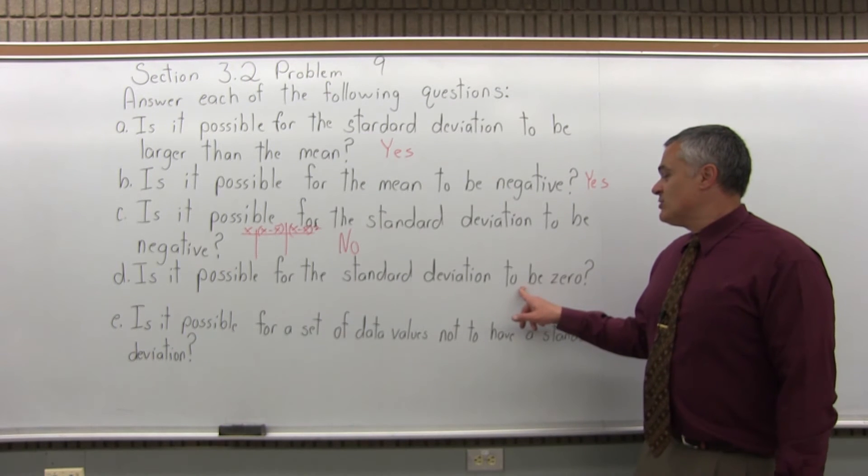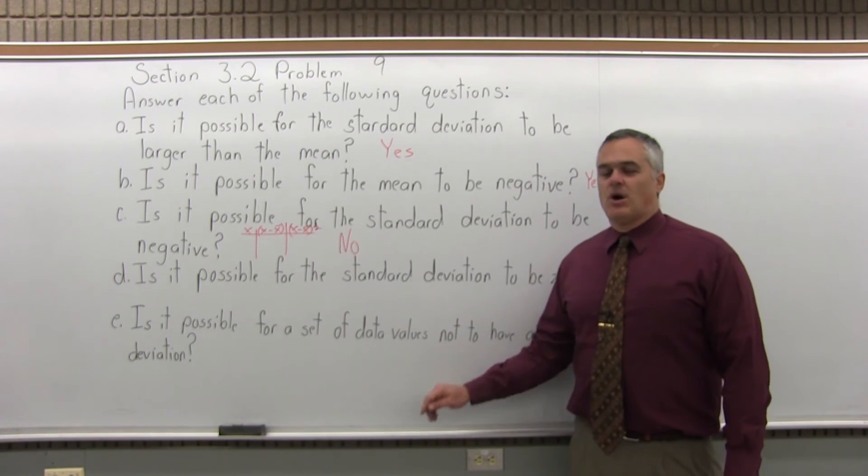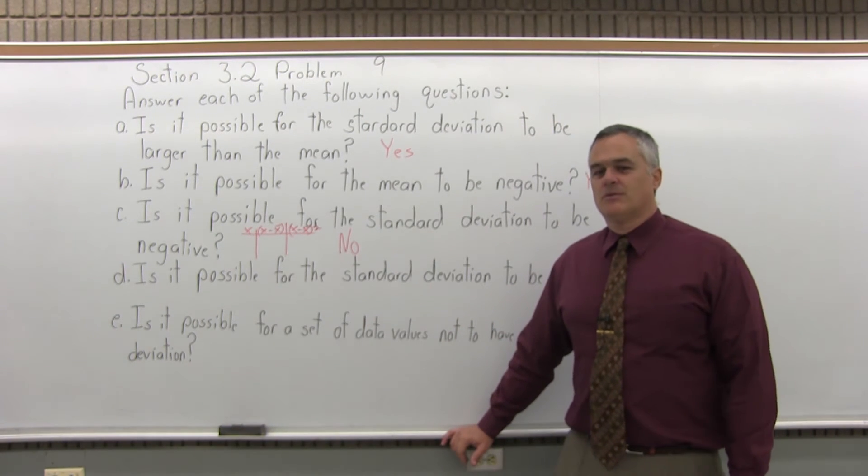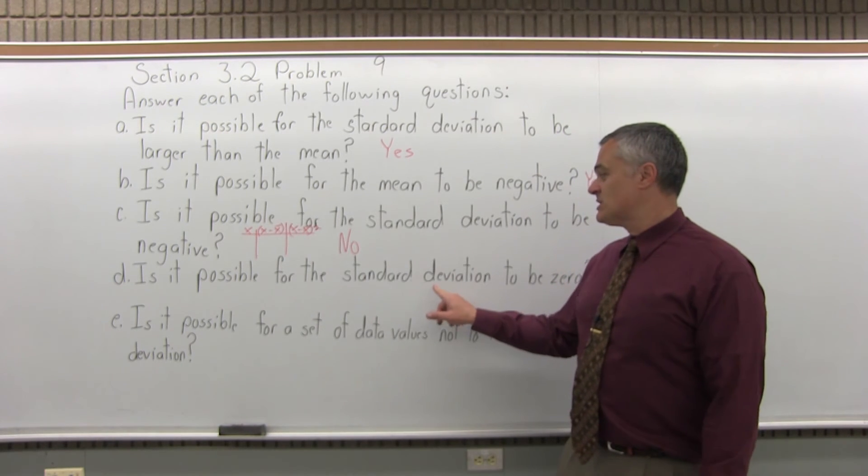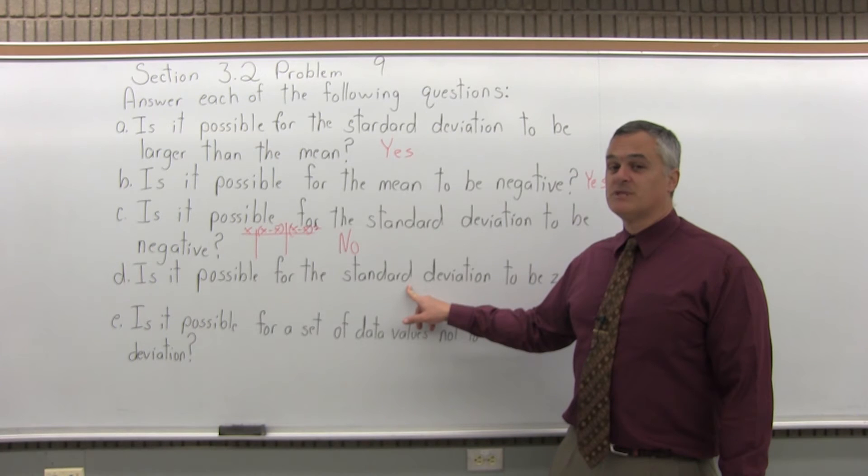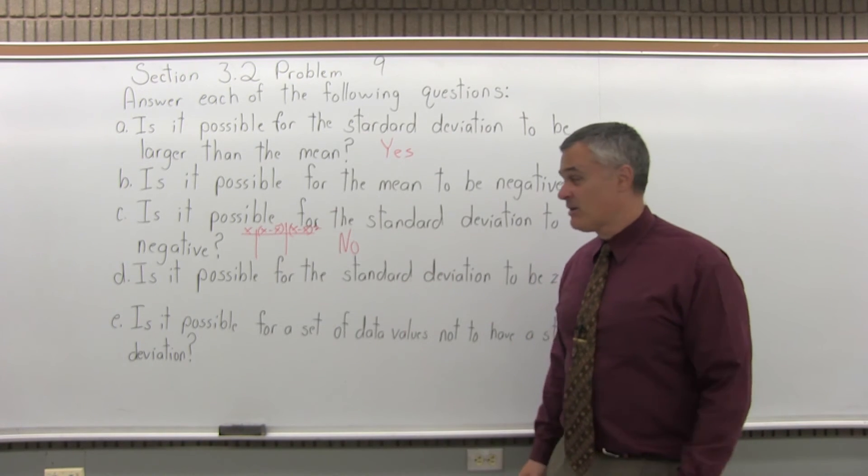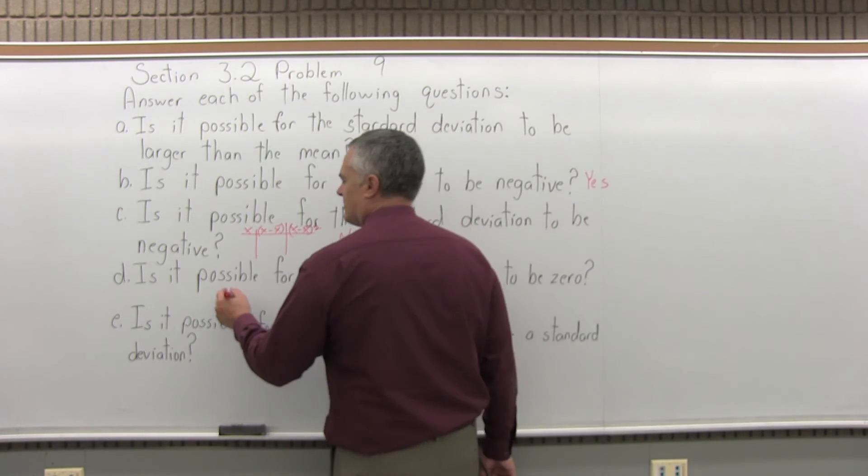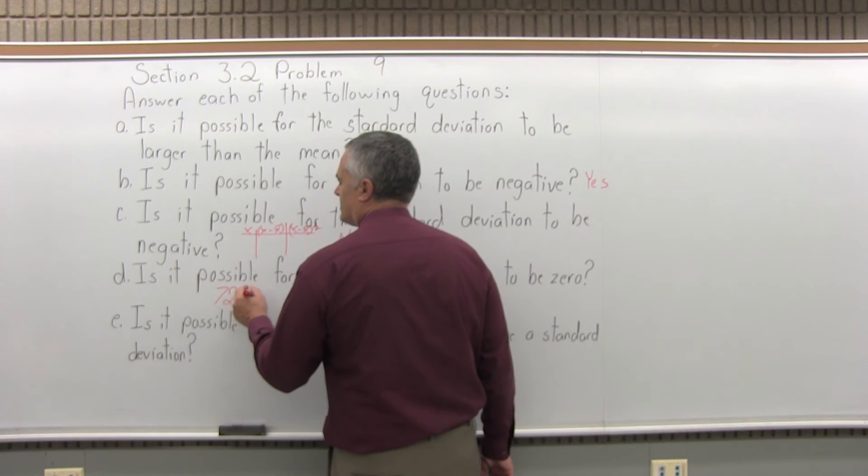Is it possible for the standard deviation to be zero? How about that? What would that mean? Well, standard deviation is a measure of how spread out your data is. And if you have a spread of zero, that means the data is not spread out at all. So yeah, you could have a standard deviation of zero.